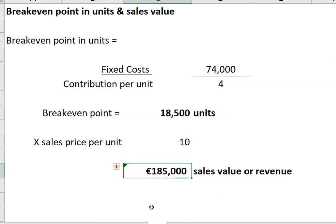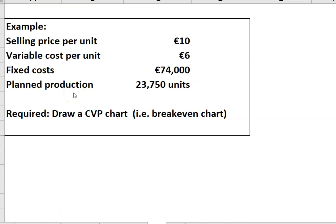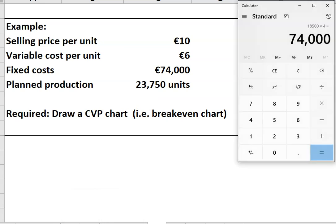The last thing is margin of safety. You don't really need to do margin of safety, but I'll show it. Margin of safety is always shown on the CVP graph. To calculate it, it's the difference between your planned or budgeted production of 23,750 units and the breakeven point in units, which is 18,500 units. If this is our budget production, budget production can fall by 5,250 units before it makes a loss.